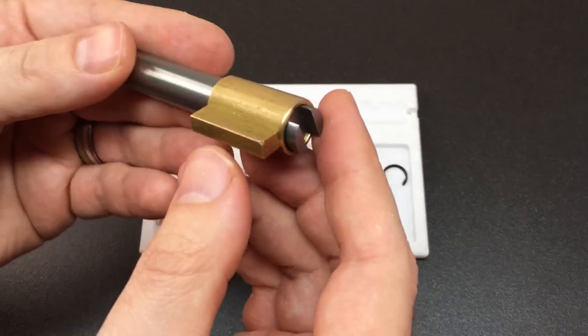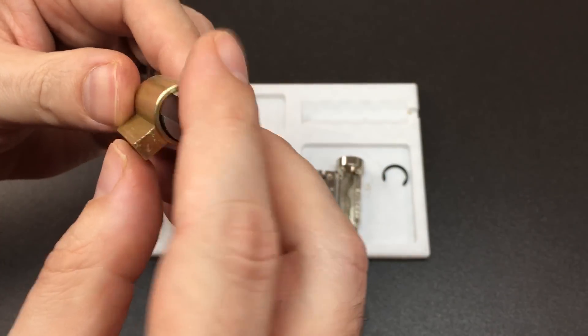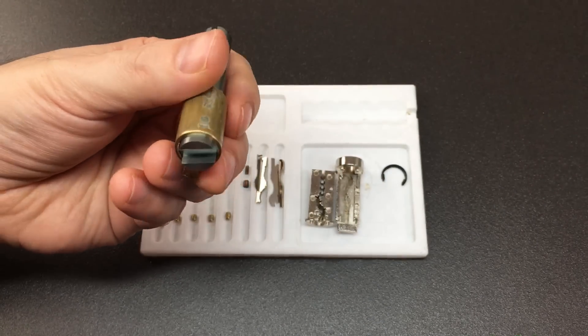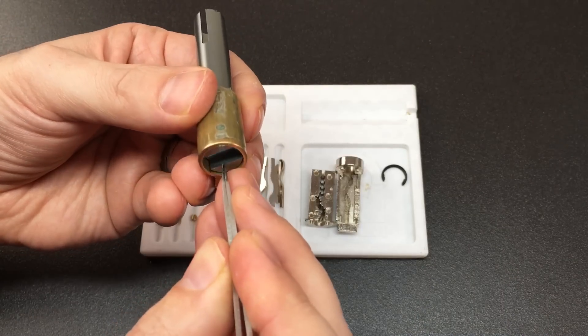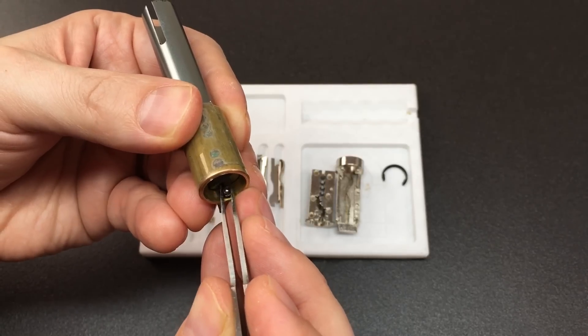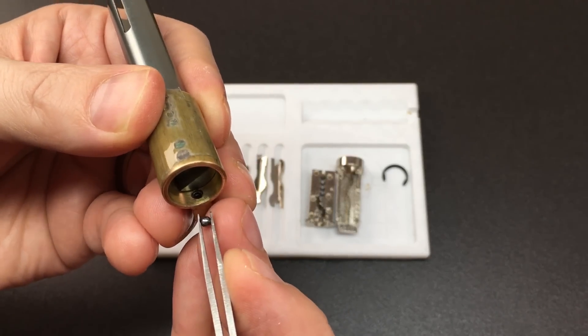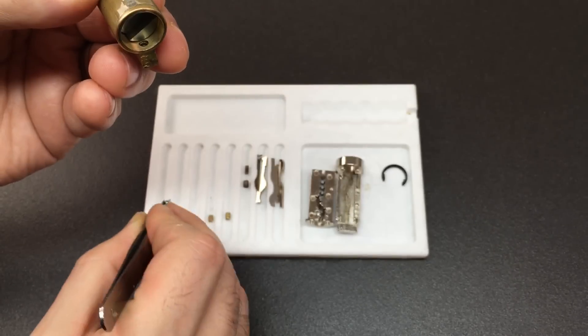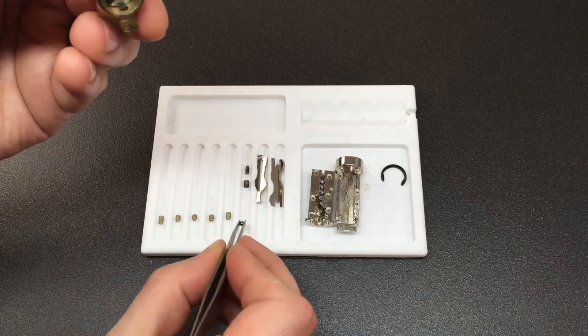Let's now have a look at the pins from this other half of the lock so these are where the driver pins sit and the first thing you'll notice is that the first chamber doesn't have a pin in at all, it has a small ball bearing. Why does it have a small ball bearing?